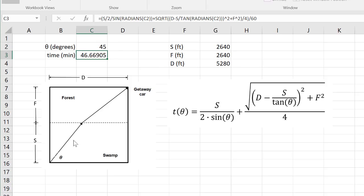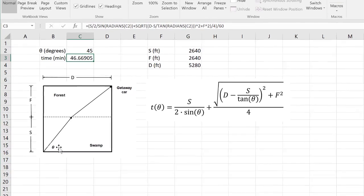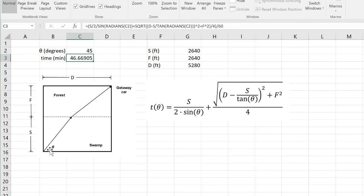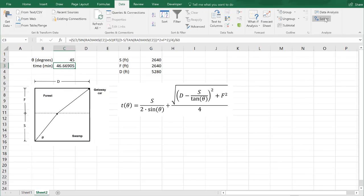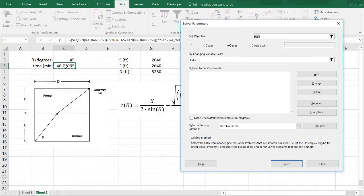So just like we did before, there's going to be some sort of optimal angle that the escapee can choose, and that's going to determine then through this equation, the time that it takes to get to the getaway car. So as I showed in a previous screencast, we can solve this scenario using the solver tool, so we're trying to set the time to a minimum by changing the angle here. And when we do that, actually I don't think this is quite right, C2, we want that to be the time to a minimum by changing the angle.